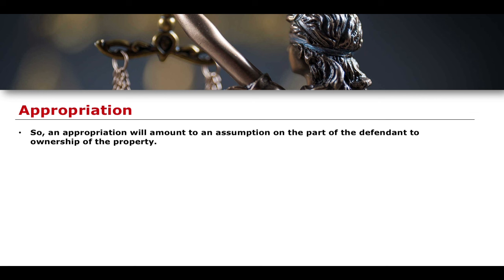If you as a defendant are acting in a way that is tantamount to ownership of the property, then you have appropriated that property. And so long as the jury is satisfied that you did so dishonestly and with the intention to permanently deprive, then you have satisfied the requirements for theft under section one of the Act.